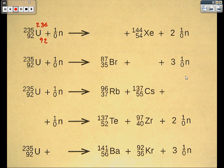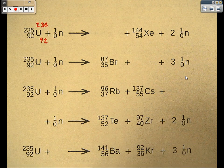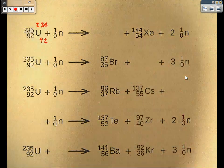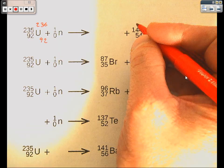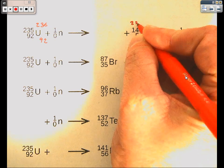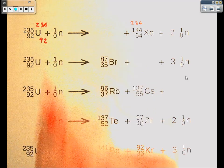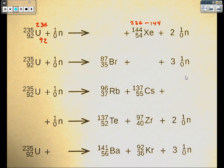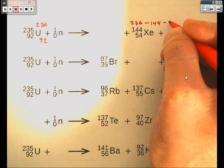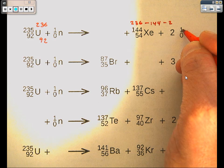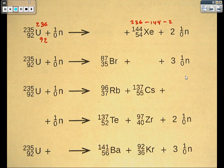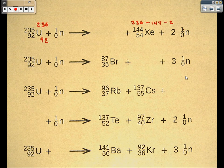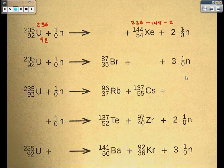We know, based on this, that the sum of the mass over here on the product side has to also be 236. So we're going to do just some simple subtraction to find what the missing mass is. We'll take 236, the mass from the product side, minus 144 from the xenon, minus 2 from the neutrons. 2 times 1 gives us that 2 that we're going to subtract there.